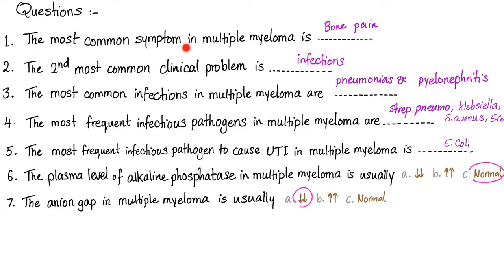Here are the answers to last time's questions. The most common symptom in multiple myeloma is bone pain. The second most common clinical problem is infections — the most common infections are pneumonias and pyelonephritis. The most frequent infectious pathogens are Streptococcus pneumoniae, Staphylococcus aureus, and E. coli.